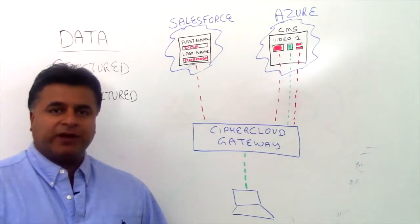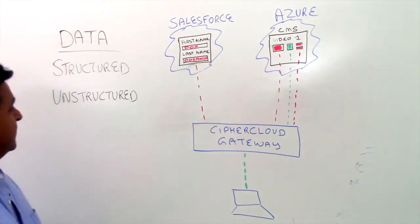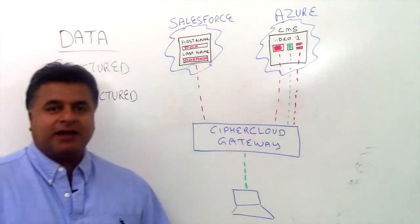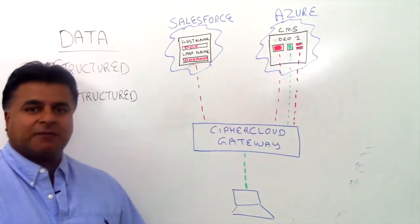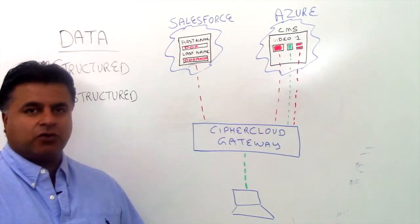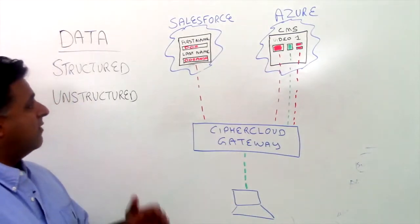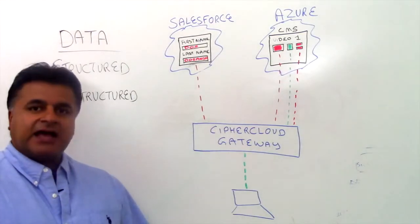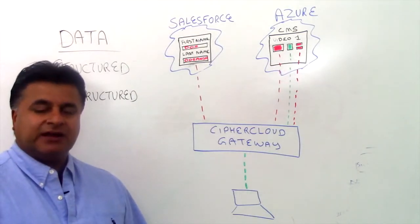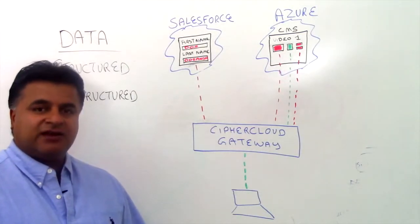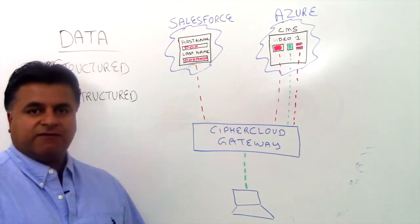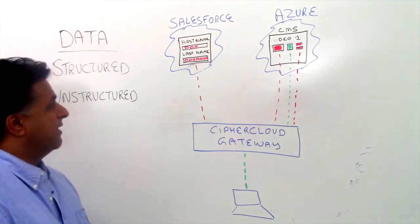I'd like to start out with the first classification of data that we highlighted here called structured data. Whenever we talk about structured data, it's really to the core of what we do with our applications such as Salesforce, who we partner with. In the context of what we actually protect, structured data can be thought of as letters and numbers as they're combined to form a word or other numeric values.